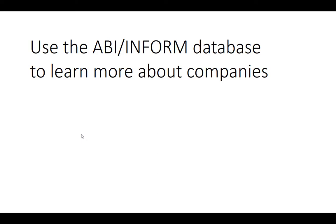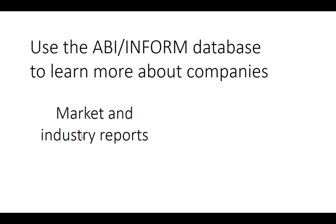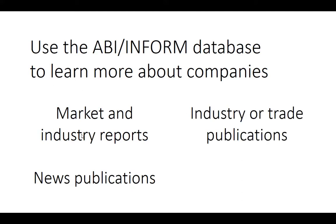You can use the ABI-INFORM database to learn more about companies. This database includes market and industry reports from Hoover's, Dun & Bradstreet, Oxford Analytica, and others. It also includes stories about companies from news publications like the Wall Street Journal, as well as industry or trade publications like Fast Company, and articles written by researchers and published in scholarly journals, like Journal of Business Ethics and MIT Sloan Management Review.